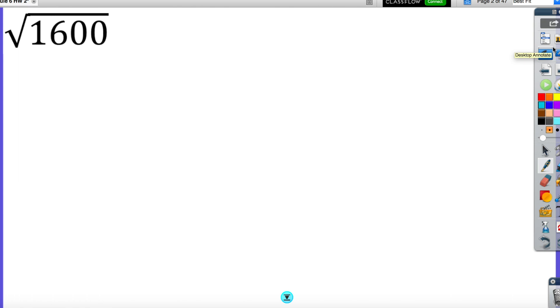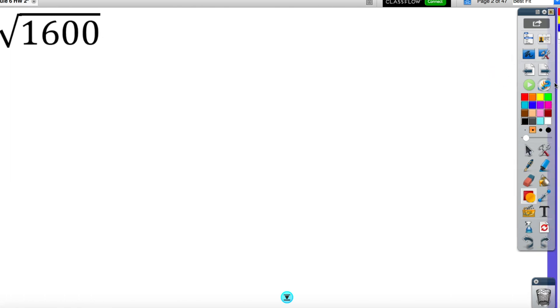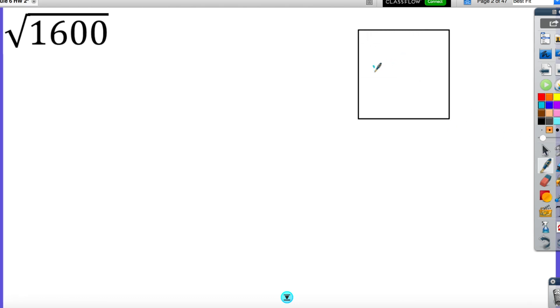We are going to be given the area of this square, which is 1600. I need to find two numbers that are exactly the same that multiply to 1600. Some of us might not know right off the top of our heads what that is. So we are going to do what we call prime factorization, and we are going to break this down into all of its numbers. Two numbers that multiply to 1600 is 16 and 100. Two numbers that multiply to 100 is 10 and 10. Two numbers that multiply to 16 is 4 and 4.